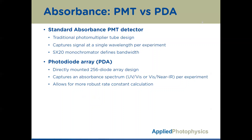So what is really the difference between absorbance detection and a photodiode array detection option? Well, both are actually absorbance-based, but the first — standard absorbance — just uses a photomultiplier tube or PMT detector that can capture signal at a single wavelength per experiment. In our standard SX20 system, it is done by selecting a wavelength on the monochromator, while in our LED system, it is done by simply using an LED with the wavelength of your choice. On the contrary, when you use a photodiode array detection option, you are able to capture kinetic traces for an entire absorbance spectrum simultaneously, rather than just a kinetic trace at a single wavelength. This PDA detector is in fact a 256-diode array, and capturing traces across the spectrum allows for more robust rate constant calculation.